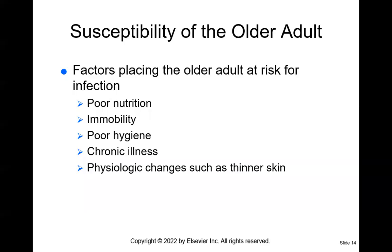Let's talk about what makes older adult patients at risk. They may suffer from poor nutrition, immobility, or a sedentary lifestyle due to injury. They may have poor hygiene because they're unable to care for themselves, chronic illnesses like diabetes or hypertension, and thinning skin — which is significant because skin is our first line of defense against injury and infection.